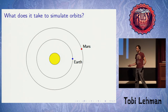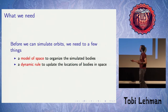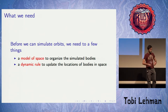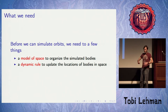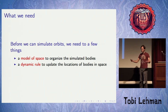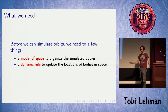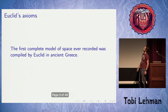So what does it take to simulate orbits? Before we can actually do that, we're going to need a couple of things. The first thing we're going to need is a complete model of space. And after that, we're going to need a dynamic rule to update the state of the bodies that are in our space. Those two things together should be sufficient for simulating an orbit, or at least getting something that kind of looks orbit-y.